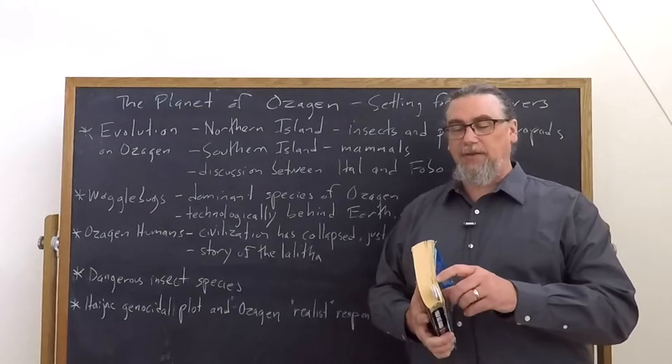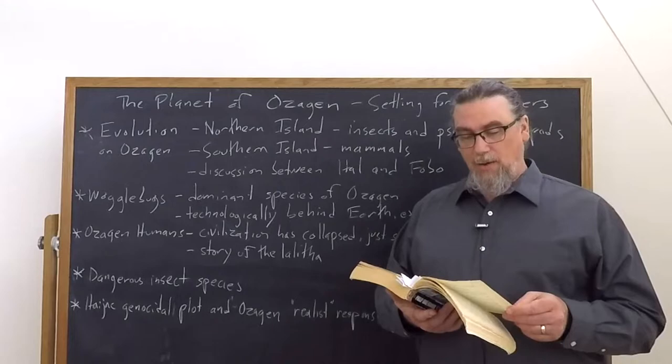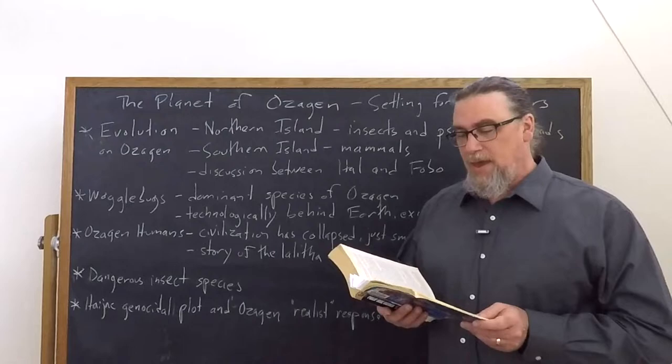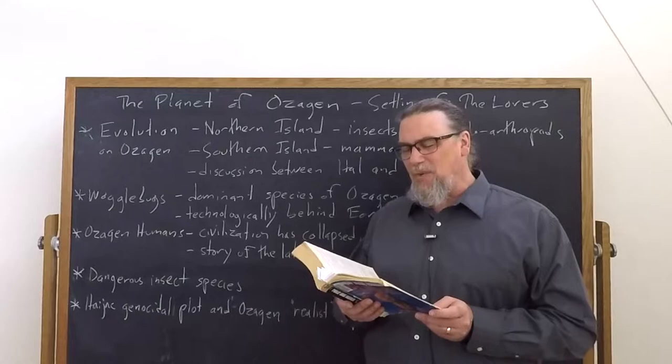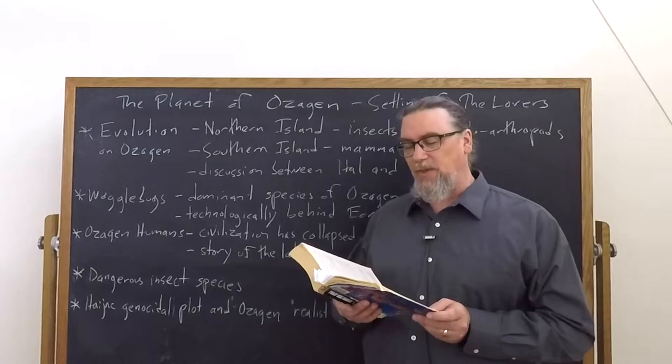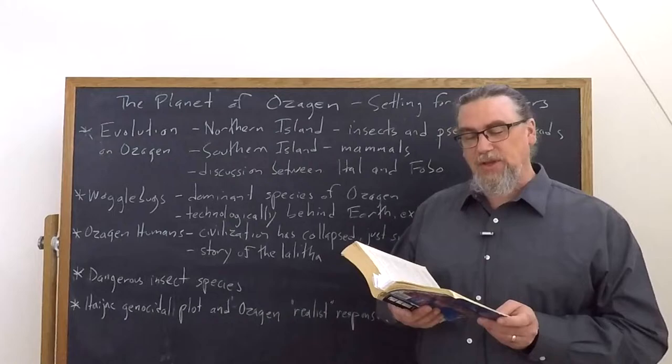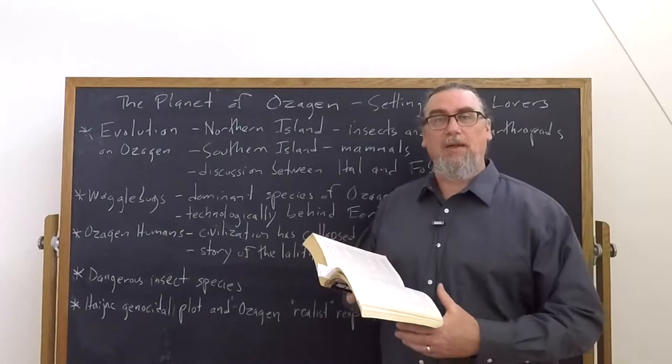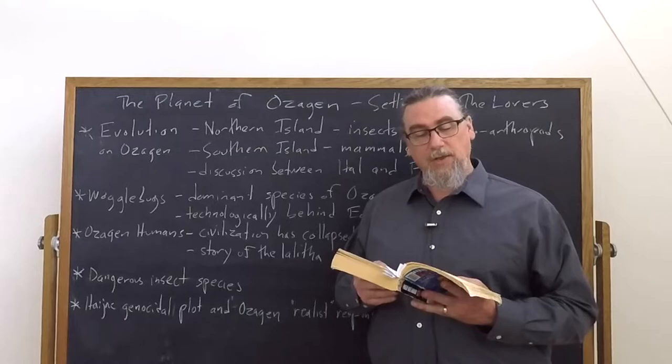So there's some interesting discussions that take place between Hal, the human, and Phobo, the waggle bug, who is going to help to explain to him how evolution takes place here. And then Hal refuses to believe Phobo. You say that a mammalian life originated from a primable sea worm. That has to be wrong. We know the first land life form was an amphibian. Its fins developed into legs. It lost its ability to get oxygen from seawater. It evolved into a reptile, then a primitive mammal, then an insectivorous creature, then a pre-simian, then a simian, and eventually into the sapient bipedal stage, and then into modern man. So this is how things developed on earth.